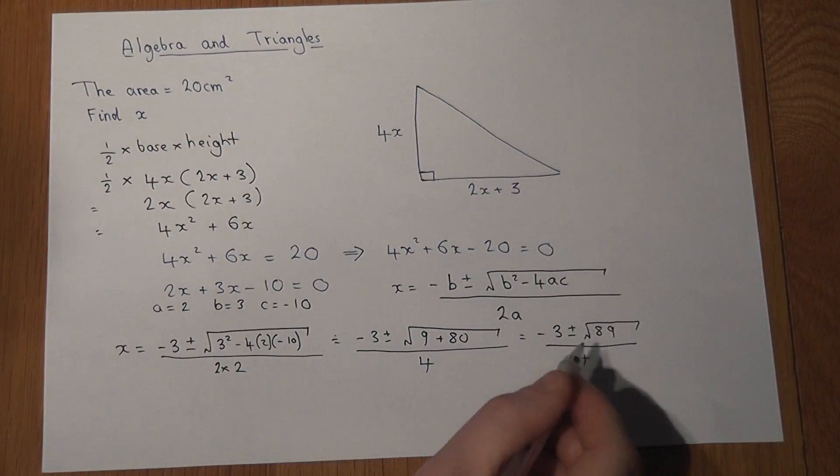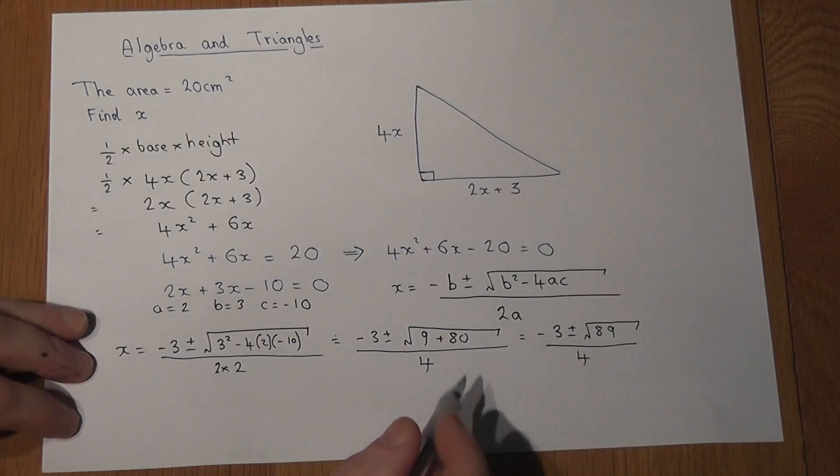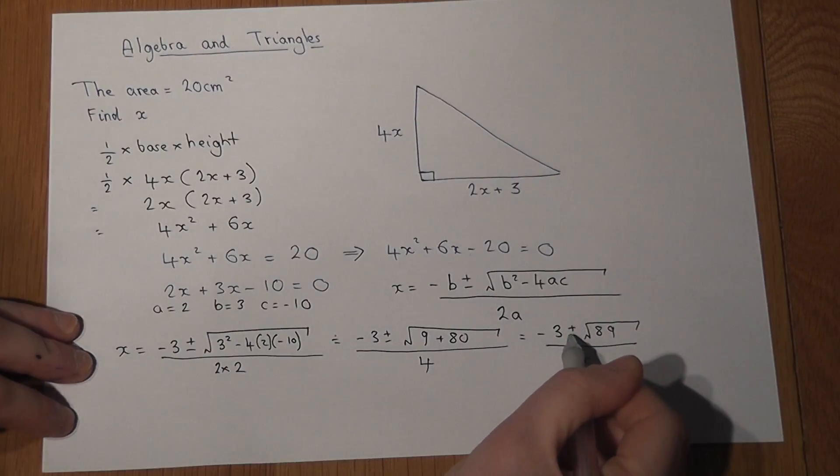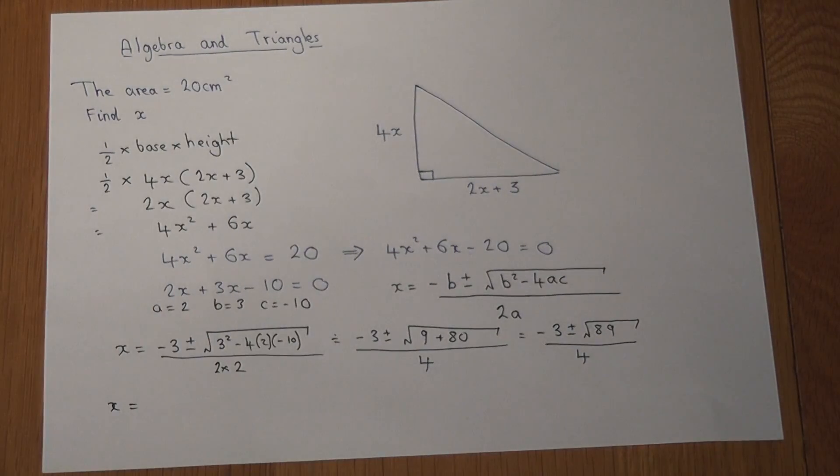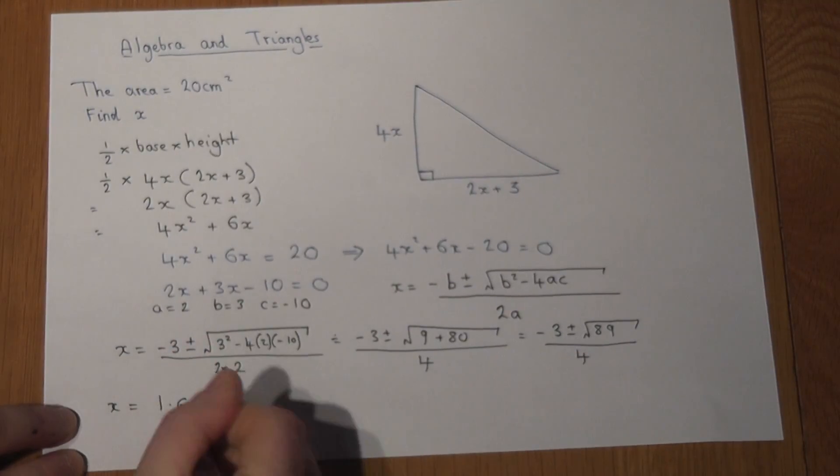However, I can now work out the possible answers for x by working at this on a calculator. I can enter it with a plus or with a minus. So x equals minus 3 plus root of 89 over 4, which works out to be 1.61 to 2 decimal places.